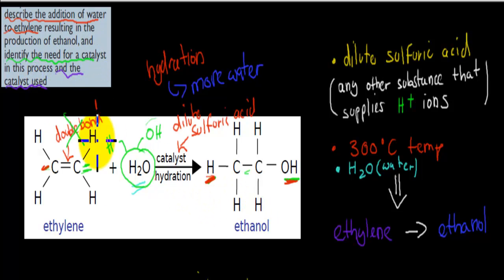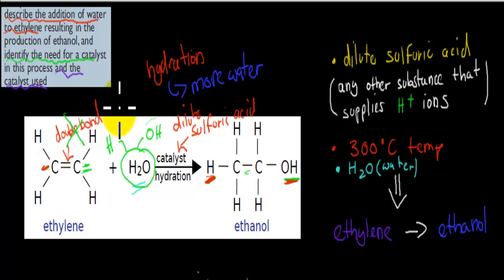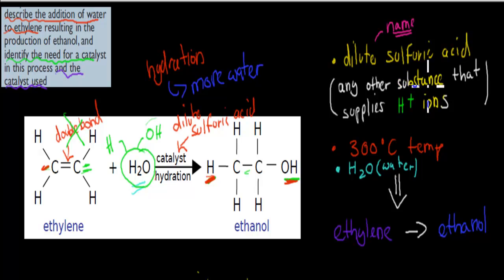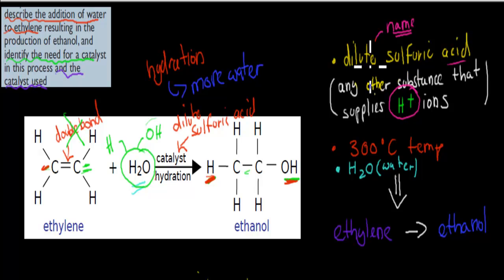We need a catalyst because otherwise this chemical reaction won't go ahead. The catalyst is dilute sulfuric acid. It can also be any other substance that supplies hydrogen ions — H⁺ ions. The term 'acid' means there are many hydrogen ions when it contacts water. So even though most of the time dilute sulfuric acid is used, anything that supplies H⁺ ions works. But dilute sulfuric acid is the most important one to remember.